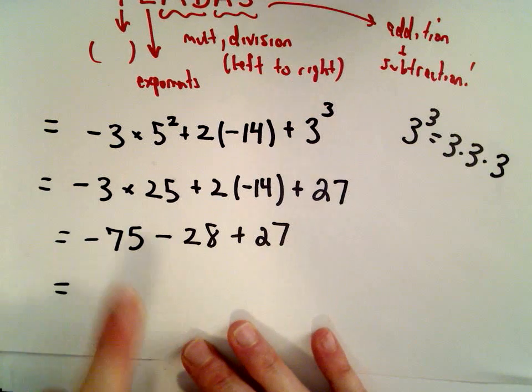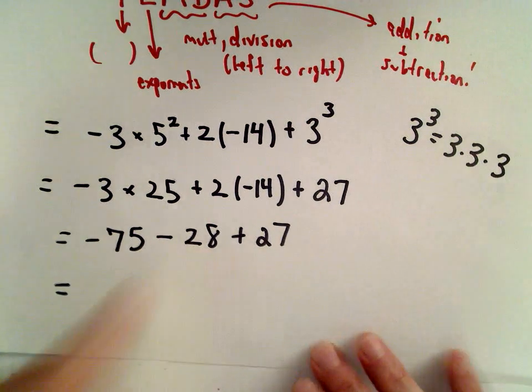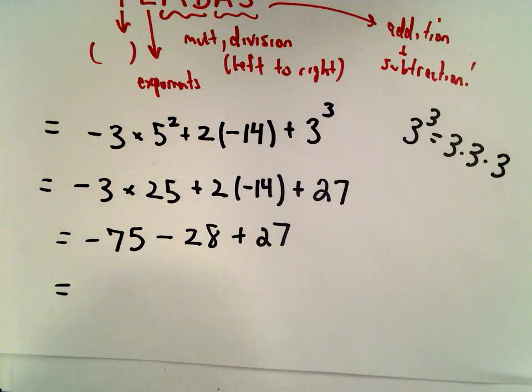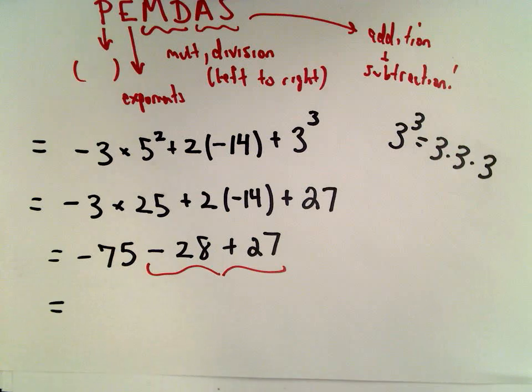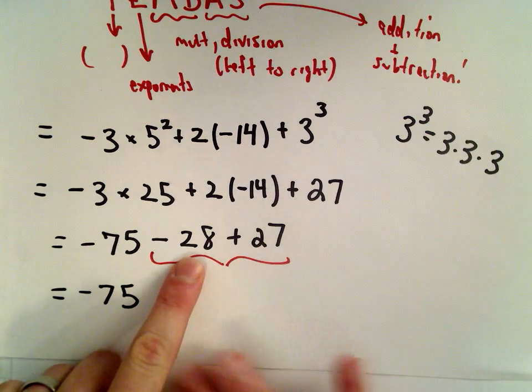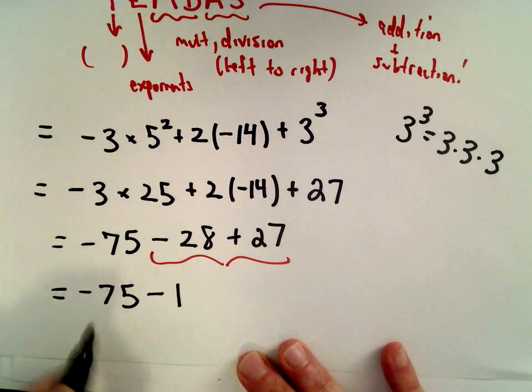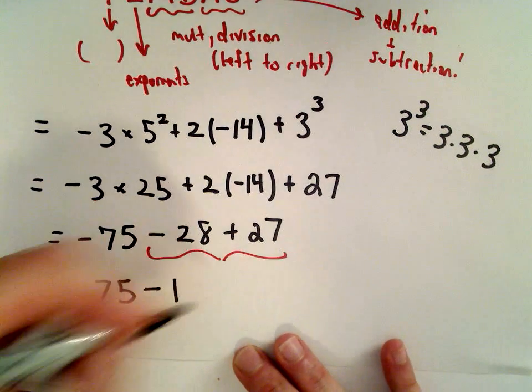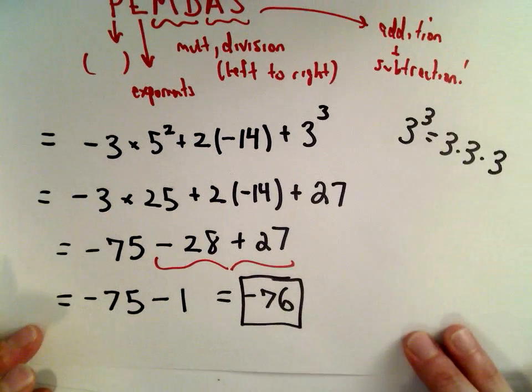You could do negative 75 minus 28 now, but I think it's a little obnoxious. I'm going to do negative 28 plus 27 first because those numbers are close together, and it's easier for me to do that arithmetic. Negative 28 plus 27, that's going to leave us with negative 1, and then negative 75 minus 1, that's going to be negative 76. That'll be our solution.